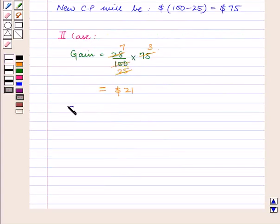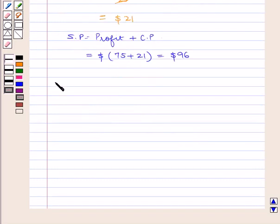Again, as selling price equals profit plus cost price, this equals $75 + $21 = $96. So now, the difference in the two selling prices equals $120 - $96 = $24.